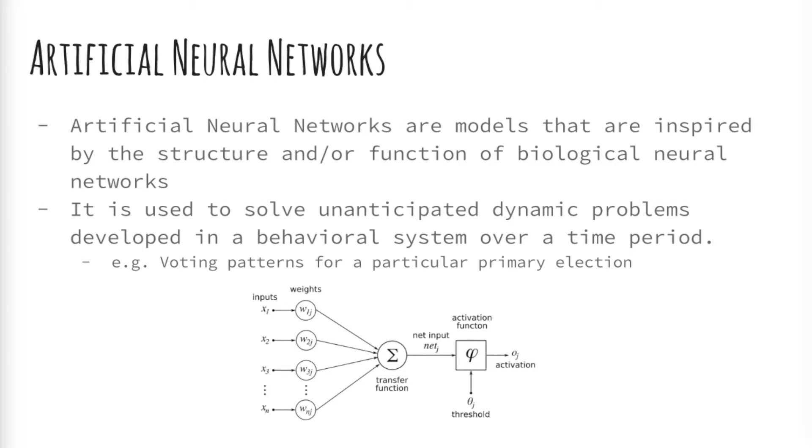Artificial neural networks are a class of pattern matching that are commonly used for regression and classification problems but are really an enormous subfield comprised of hundreds of algorithms and variations for all manner of problem types. These algorithms are widely used to predict election results by looking into behavioral patterns of voters over a period of time.